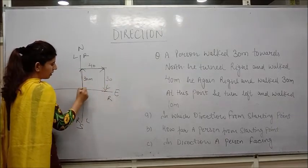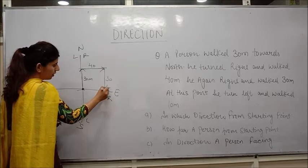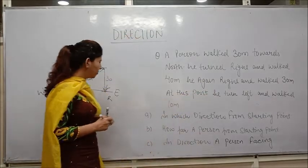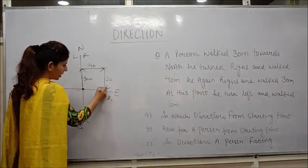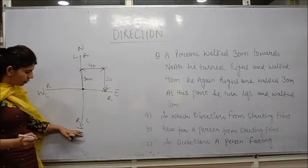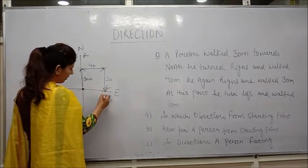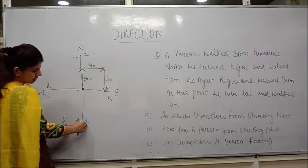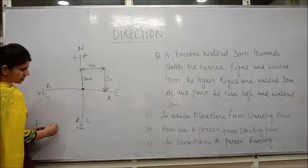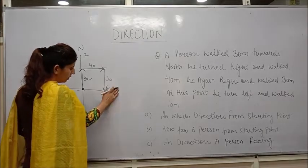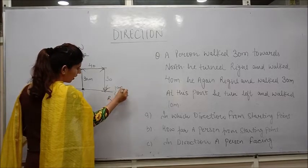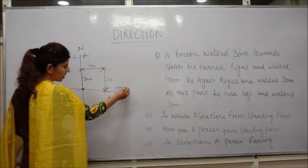Now the person comes to this point. At this point, he turned left and walked 10 meters. The person is now here and turned left. The person is facing towards south and he turned left — south left is towards this direction and right is towards this direction. So the person turns to this side and walked 10 meters. Finally, the person comes at this point.